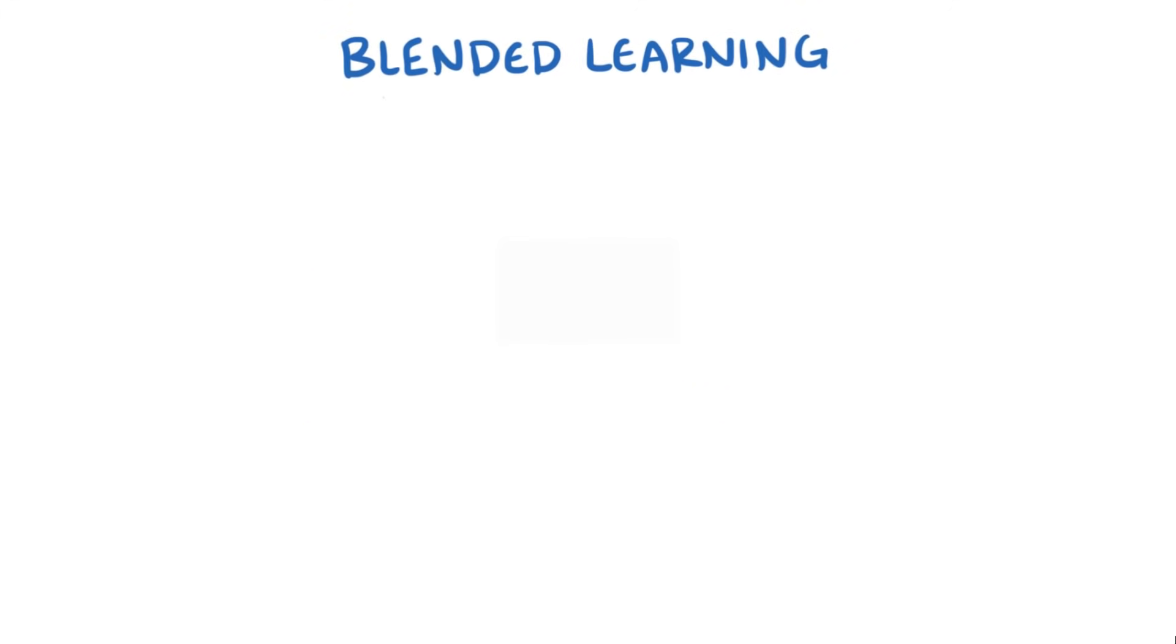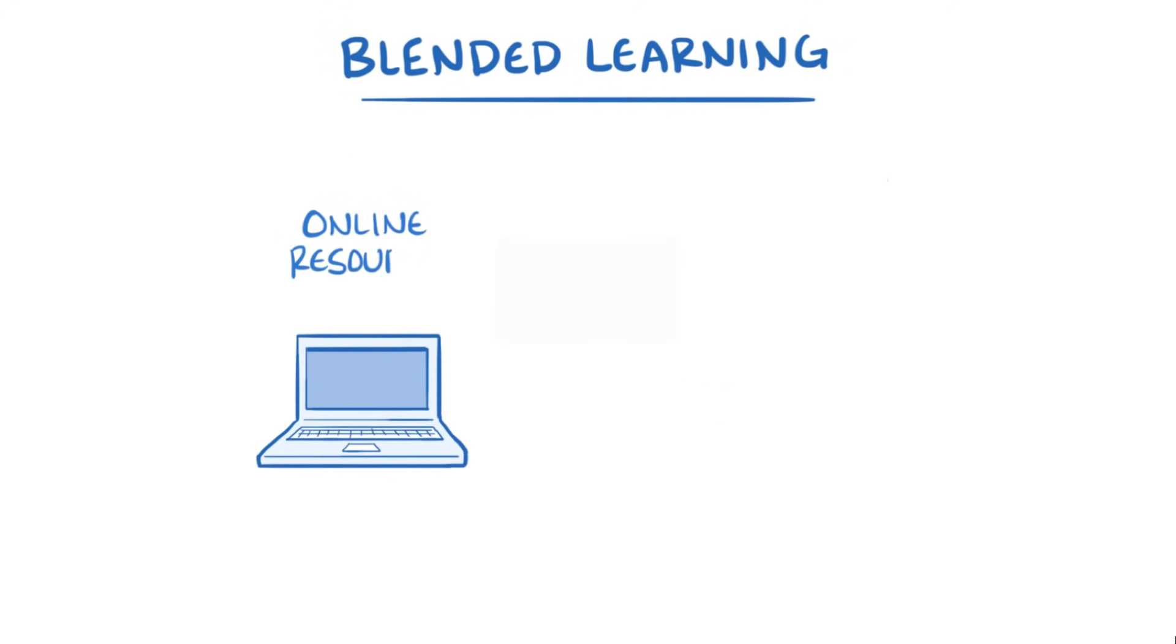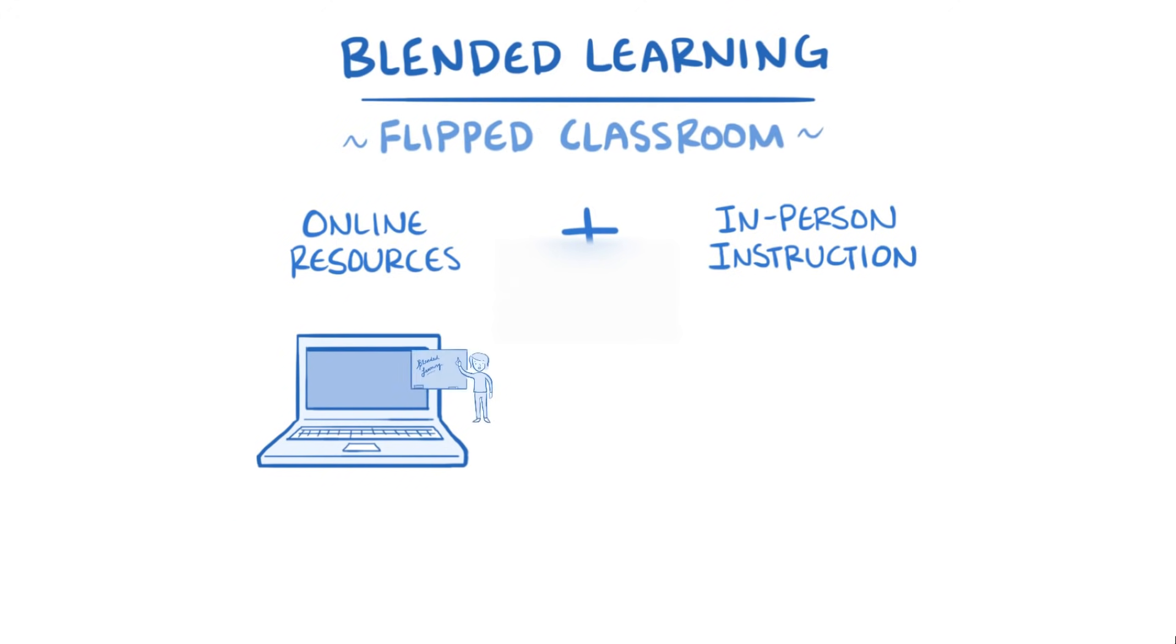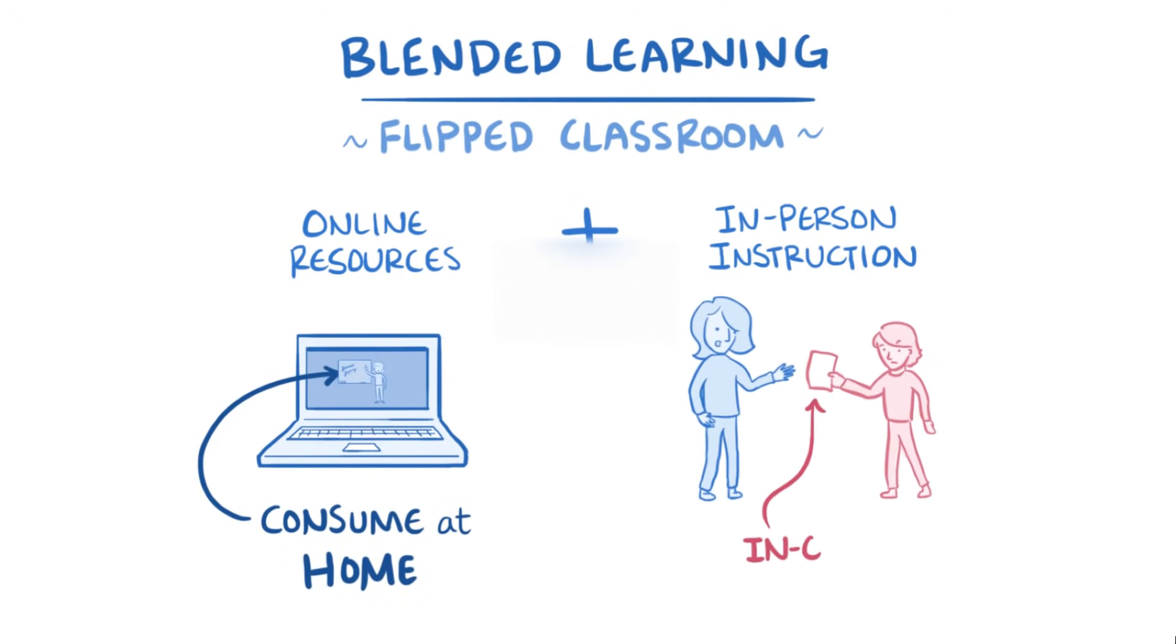Alright, so as a quick recap, blended learning combines online resources with in-person instruction, and one type of blended learning is the flipped classroom, where students consume their lecture resources at home and spend class time doing in-class activities. This allows the teacher to change from a passive sage on the stage to a more active guide on the side, facilitating a student-focused learning model.